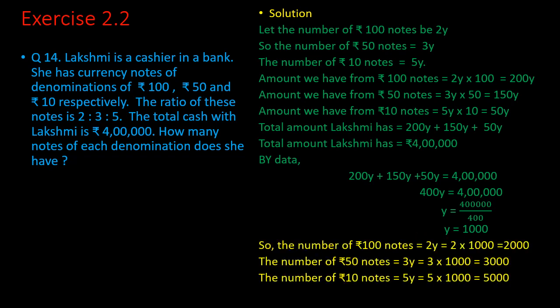So, the number of 100 rupee notes = 2y = 2 × 1000 = 2000. The number of 50 rupee notes = 3y = 3 × 1000 = 3000. The number of 10 rupee notes = 5y = 5 × 1000 = 5000.